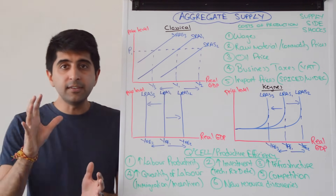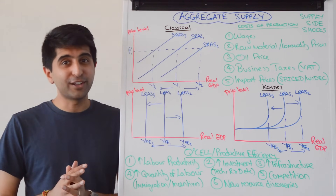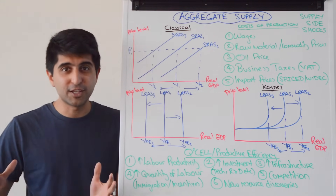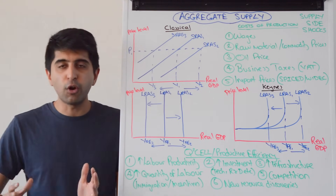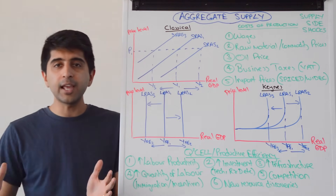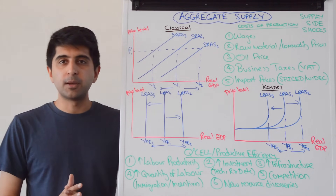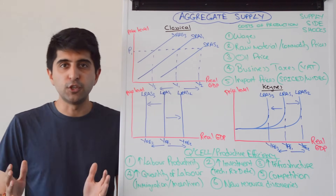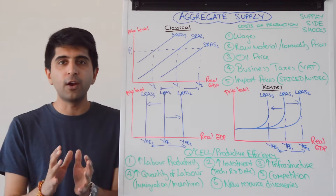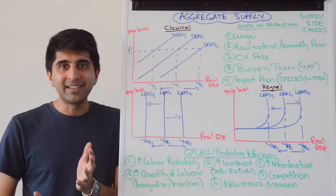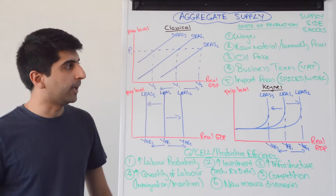You've got Keynesian economists with their own interpretation of aggregate supply, and classical economists with their own interpretation. Neither school is right, neither school is wrong, so it's totally up to you to use whichever aggregate supply interpretation you want. It's not going to be wrong. Use whatever you're comfortable with, but you need to know why they differ and what aggregate supply looks like in both models.